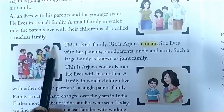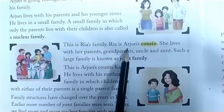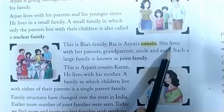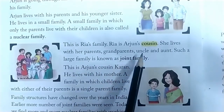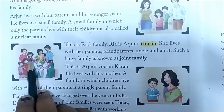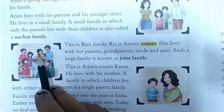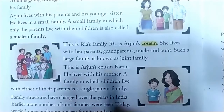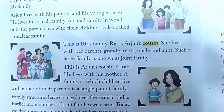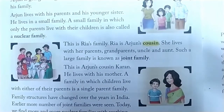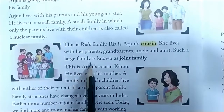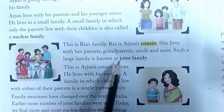This is Ria's family. Ria is Arjun's cousin. She lives with her parents, grandparents, uncle and aunt. Such a large family is known as a joint family — where more family members live together, such large families are called joint families.